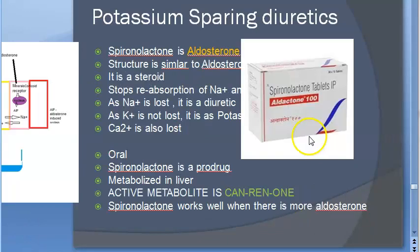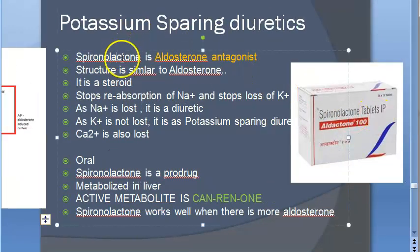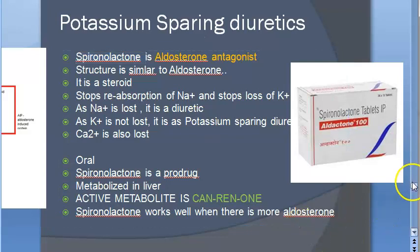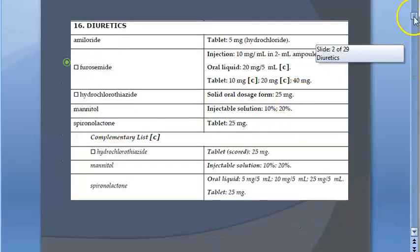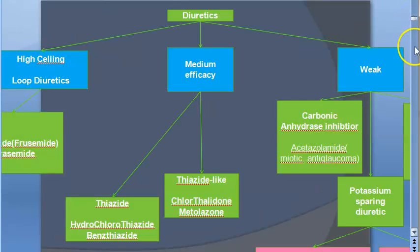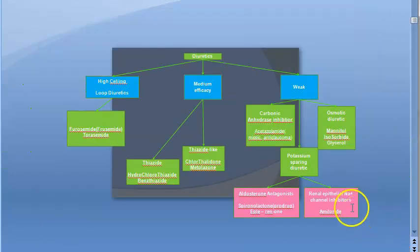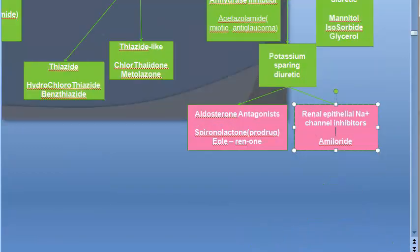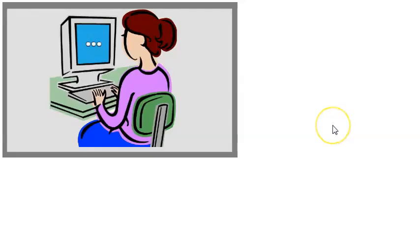We are done with potassium-sparing diuretics. We have spoken about spironolactone and eplerenone. Amiloride is also a potassium-sparing diuretic — it is a direct-acting one. It is a renal epithelial sodium channel inhibitor; it inhibits sodium channels. We will meet you in the next video. Take care, bye-bye.